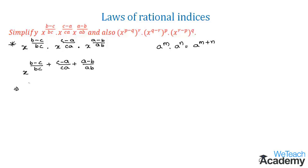So let us simplify the powers. That implies we get here x power, and by taking here the LCM as abc, we get the numerator terms as a into b minus c plus b into c minus a plus c into a minus b.